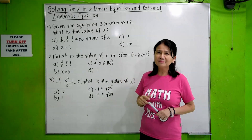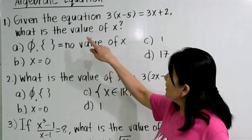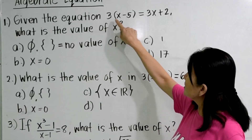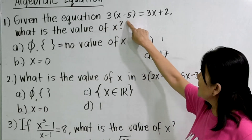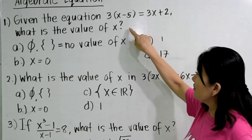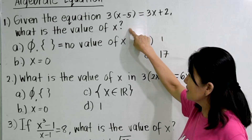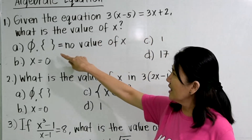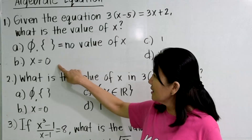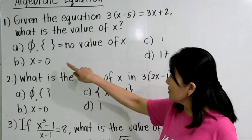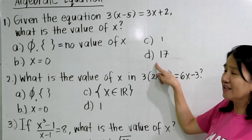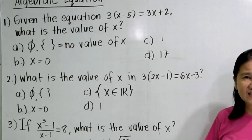Number one: given the equation 3 times the quantity X minus 5 equals 3X plus 2, what is the value of X? Letter A, empty set or no value of X. Letter B, X equals 0. Letter C, 1. And letter D, 17.